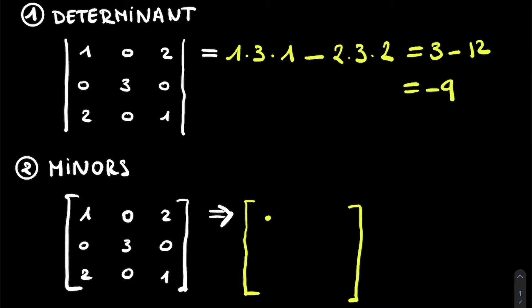For the element on the first row and the first column, we delete the first row and the first column, and we calculate the determinant of the remaining elements, which in this case will simply be 3 minus 0. So that would be 3. Then for the element on the first row and second column, we again delete the first row and second column. We look at the determinant of the remaining elements. So it will be 0 times 1 minus 0 times 2, which is 0. Then for the element on the first row and third column, we delete the first row and third column. Look at the determinant of the remaining elements. We get 0 minus 6, which is minus 6.